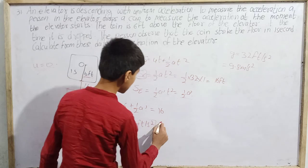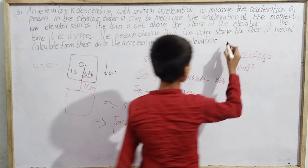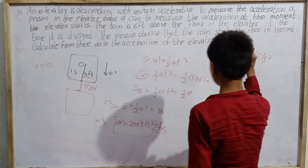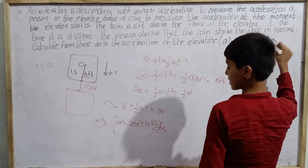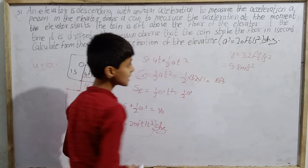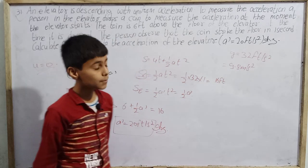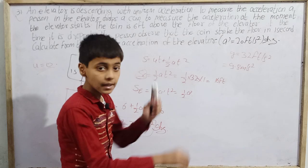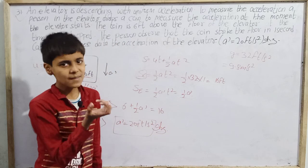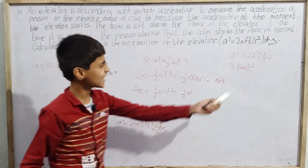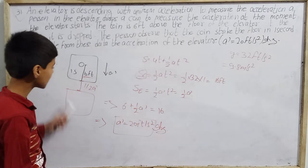It was very easily solved. The acceleration of the elevator, which we called a', is 20 feet per second square. This is the exact answer. We used g = 32 ft/s²; if we used 32.17 it would slightly change, but there is no requirement for that level of accuracy here.